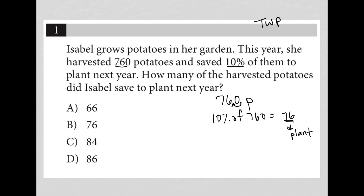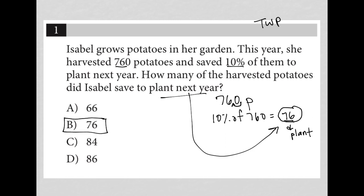The question goes on to say: how many of the harvested potatoes did Isabel save to plant next year? Well, that was just 10% of 760, which is 76, which we already took time to figure out. Therefore, our answer here is choice B.